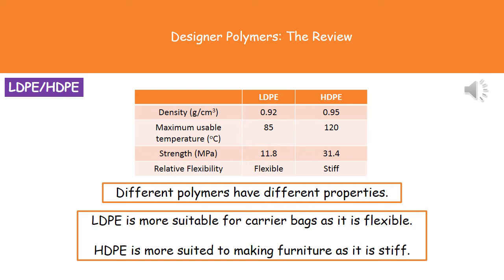Welcome to our review on designer polymers. What we need to remember is that different polymers have different properties, and we're going to select certain polymers for certain jobs based on those properties. In the table, I've given you some information about two different polymers: LDPE and HDPE. If we look at LDPE and decide what would be the best one to use to make carrier bags, LDPE would be our choice because it's flexible.